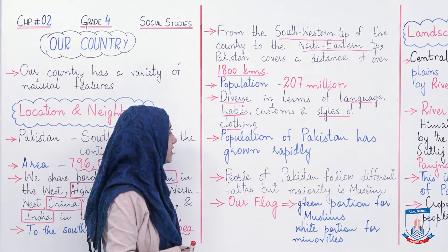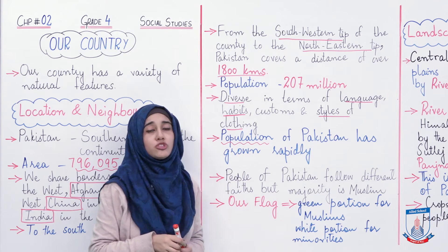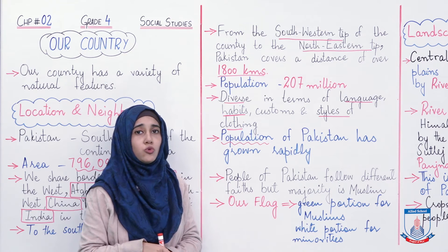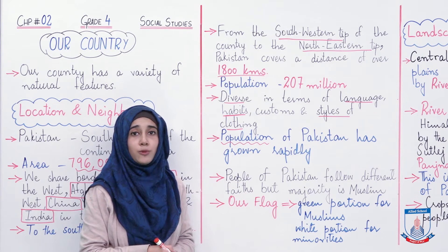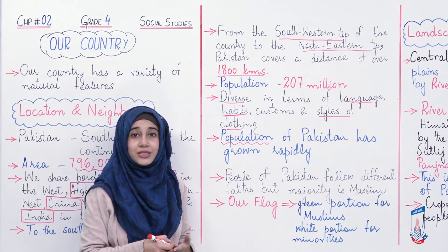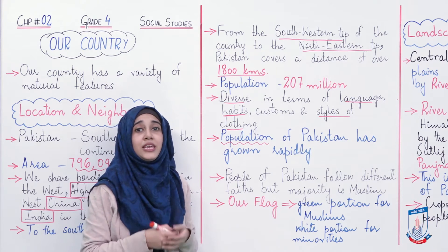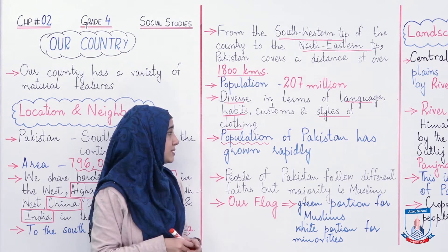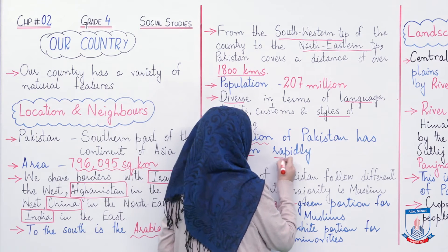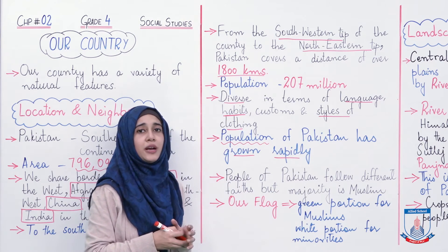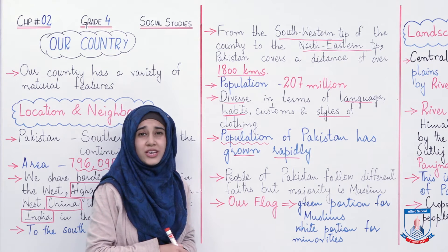Population of Pakistan has grown rapidly. Humaare mulk ki abaadi bahut tezi se barh rahi hai. Is ki mukhtalif wajuhaat hain — ek wajah toh yeh hai ke logon ko yeh andaaza nahi hai ke jab abaadi bahut tezi se barhti hai toh saath saath masaail bhi bahut tezi se barhte hain. Unemployment yaani berozgaari barh jaati hai, rahne ke liye ghar kam par jaate hain, peene ke liye paani kam par jaata hai. 'Grown rapidly' — grown matlab badhna aur rapidly matlab bahut speed se. Toh humaare mulk ki abaadi is waqt bahut tezi se barh rahi hai jo ke achi baat nahi hai.